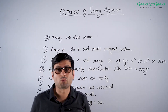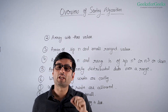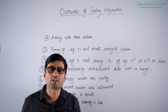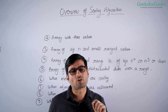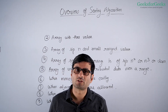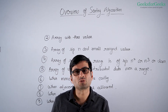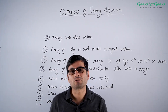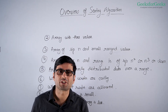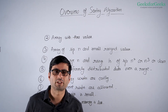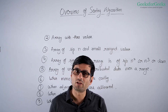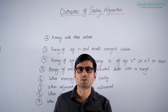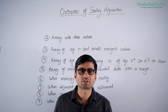This problem can again be solved using quicksort partition algorithms. We can either use Naive partition, Lomuto partition, or Hoare's partition. Naive is stable, Hoare's is fastest.